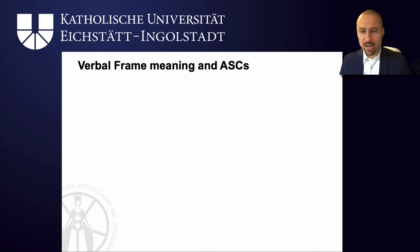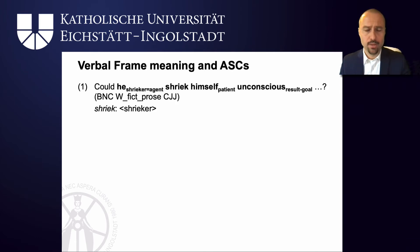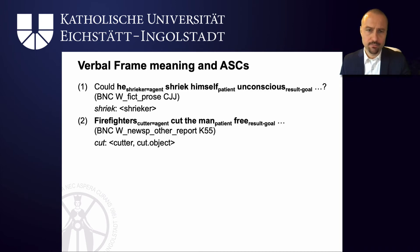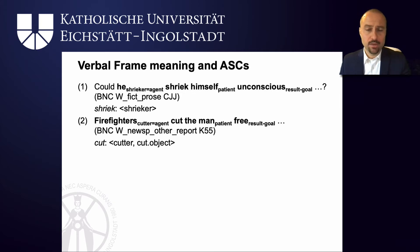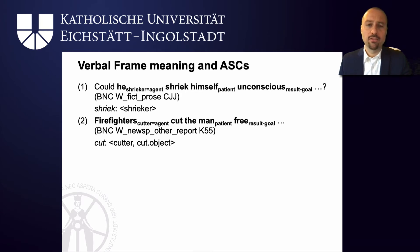So how exactly do verbal frames merge with argument structure constructions? In 'could he shriek himself unconscious', the sole participant role of 'shriek' — the shrieker — merges with the agent, and the patient and the result-goal slot are provided by the abstract argument structure construction. In 'firefighters cut the man free', the cutter role of 'cut' is merged with the agent slot. The cut object is not mentioned because we hope that the man is not cut but the car from which he is to be cut free. Still, the argument structure construction gives you the patient role for the man because he's affected by the action, and the result-goal is 'free'.